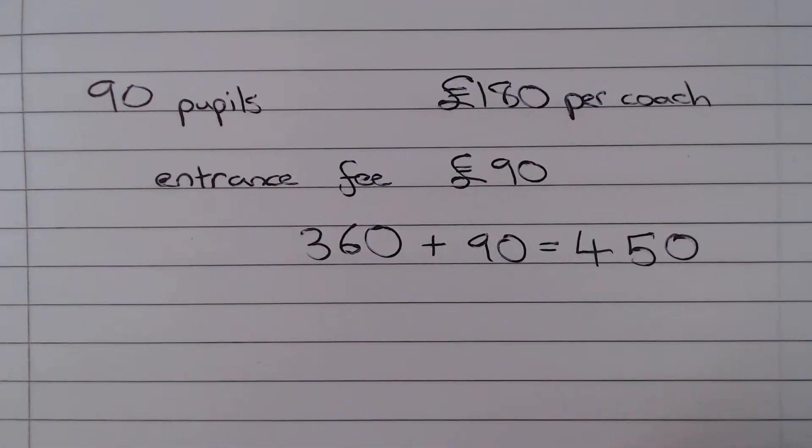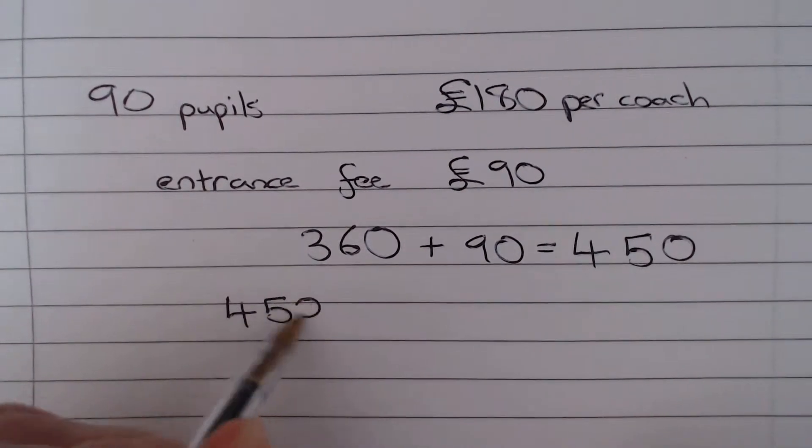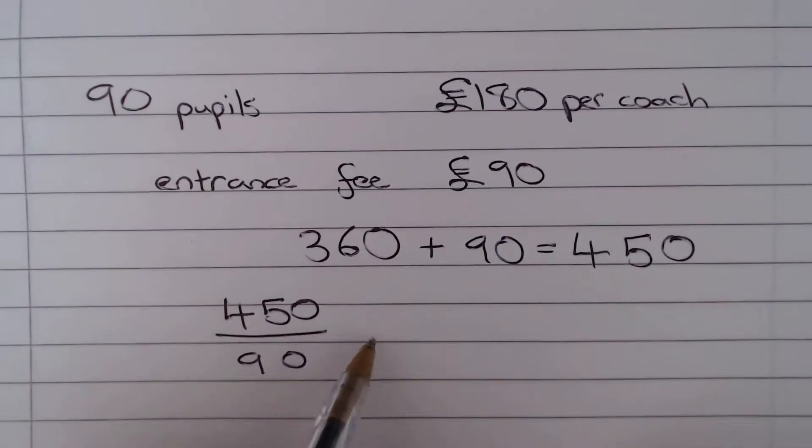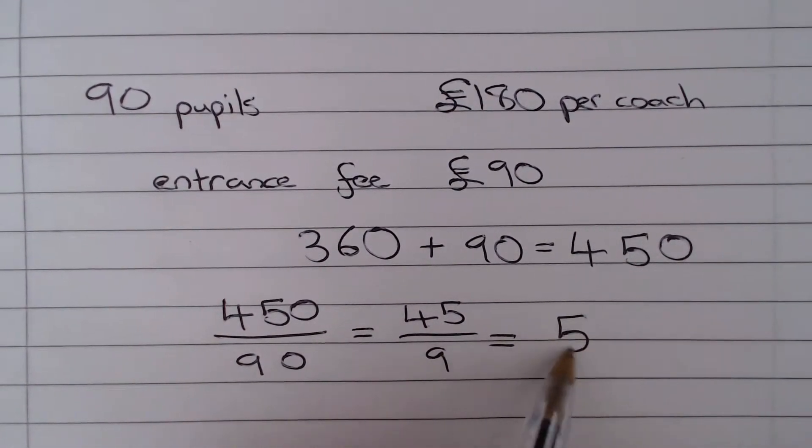But there were 90 people, so we need to work out the division. We need to do 450 divided by 90. That's the same as 45 divided by 9, which gives us 5. So the answer to this question is £5.